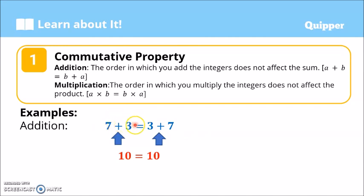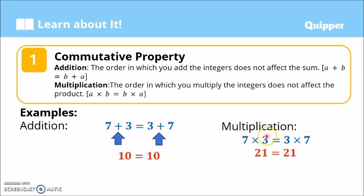For multiplication, the order in which you multiply the integers does not affect the product. So we have a times b is equal to b times a. Just like addition, kahit nababalibalikta mo yung mga numbers na i-multiply, ganun pa rin ang magiging sagot. Example: 7 times 3 is also equal to 3 times 7, because 7 times 3 is 21, and 3 times 7 is 21 pa rin. That's the commutative property of multiplication.